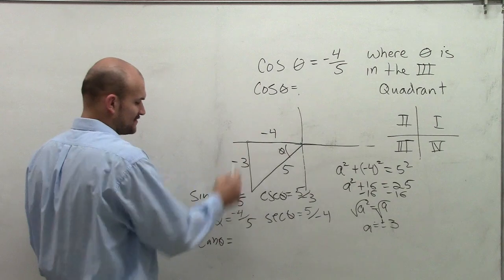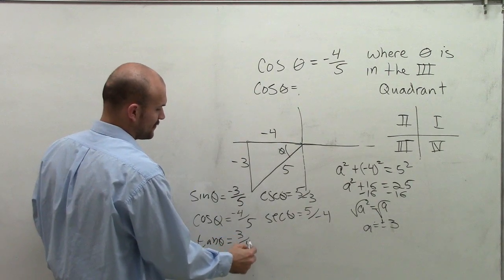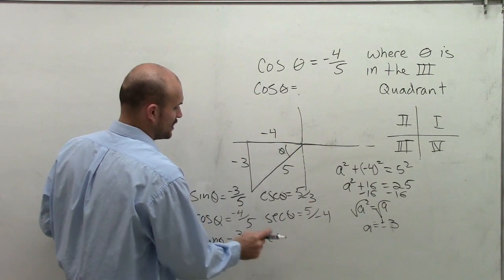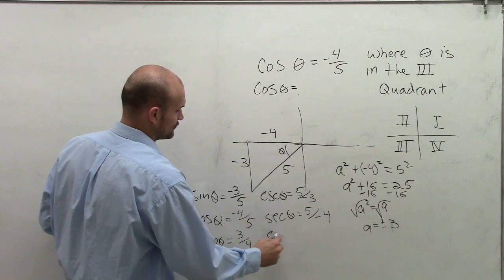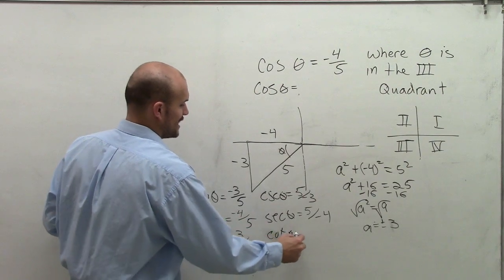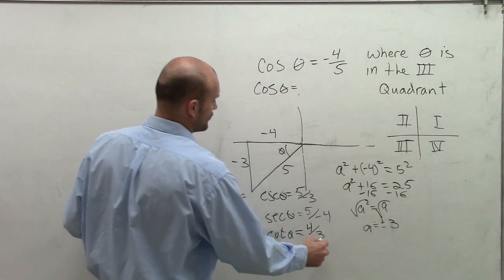And lastly, we're going to deal with the tangent function, which represents the opposite over the adjacent from theta. So my negatives are going to divide out, so therefore I'll have a positive 3 fourths. And the cotangent of my angle is going to be the reciprocal of that, which will be 4 thirds.